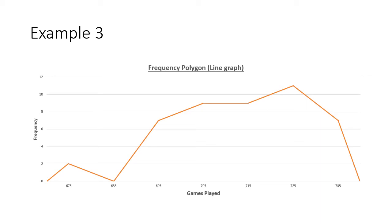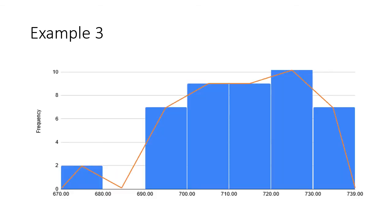And here it is. If you look, 675 had a frequency of 2, so we plotted the point there. 685 had a frequency of 0, so we plotted the frequency there, and we just connected it all with lines. What you're going to notice is this frequency polygon is representing the same exact data that our histogram did. When I graphed the two on top of each other, it's almost exactly the same.